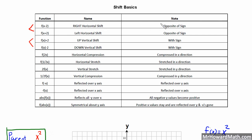You'll notice a couple things. One, the horizontal shifts are going opposite of the sign. For example, we have x minus 2 here. You might think that would be a left shift, but it's actually opposite of the sign and is a right horizontal shift. Here we have x plus 2. You might think that should be to the right, but it's actually opposite of the sign, so it is actually a left horizontal shift. The minus 2 and the plus 2 are inside the parentheses with x. When that occurs, you will have a horizontal shift. It doesn't matter what the number is — in this case we're using 2, so we're going 2 right here, 2 left here. If we had x minus 4, we would be going 4 right; if we had x plus 4, we would be going 4 left.